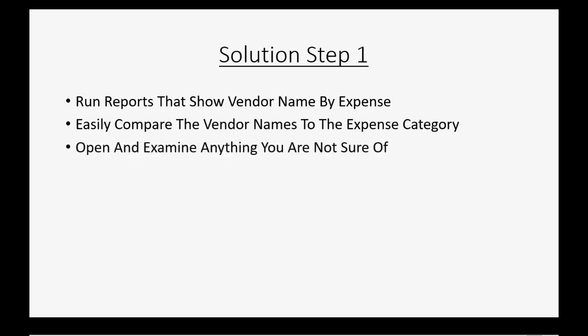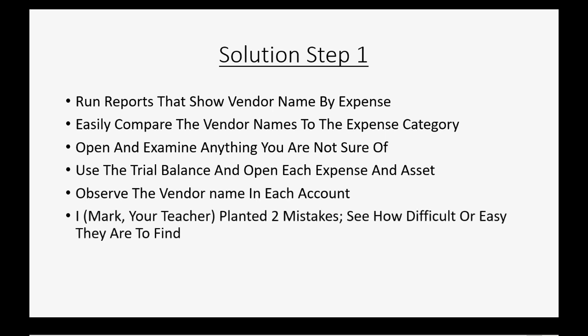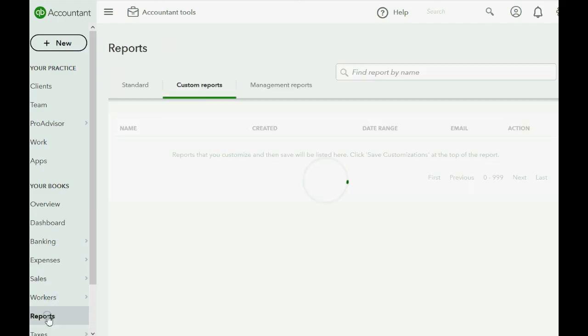The solution: step one, we will run reports that show vendor name by expense. We will easily compare the vendor names to the expense category, and open and examine anything we're not sure of. When we run this report we will use the trial balance and open each expense and asset account. We will observe the vendor name in each account. I, your teacher, have actually planted two mistakes — let's see how difficult or easy it is to find them using this method. We click the Reports menu.